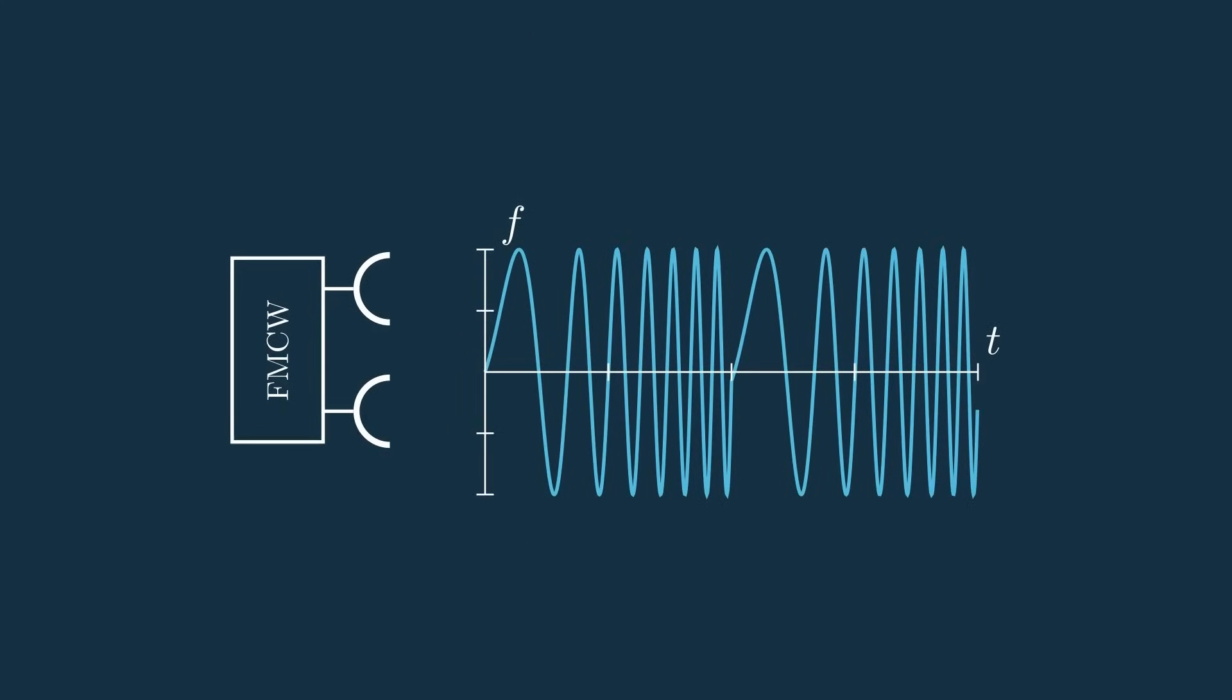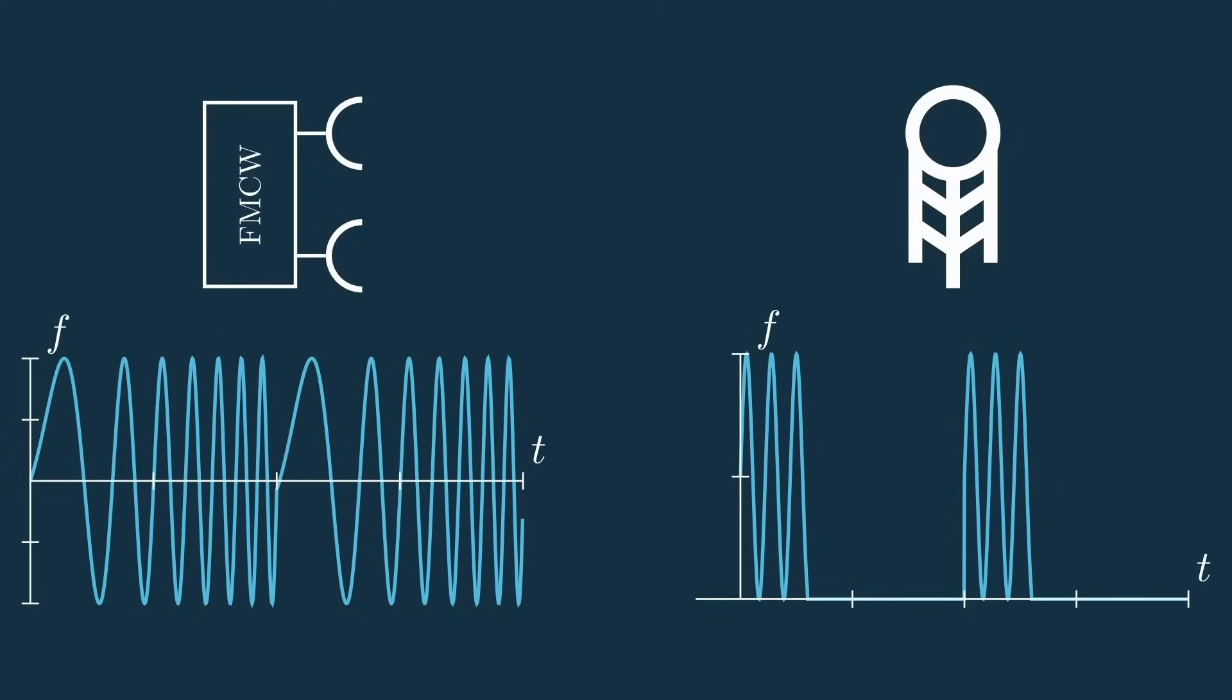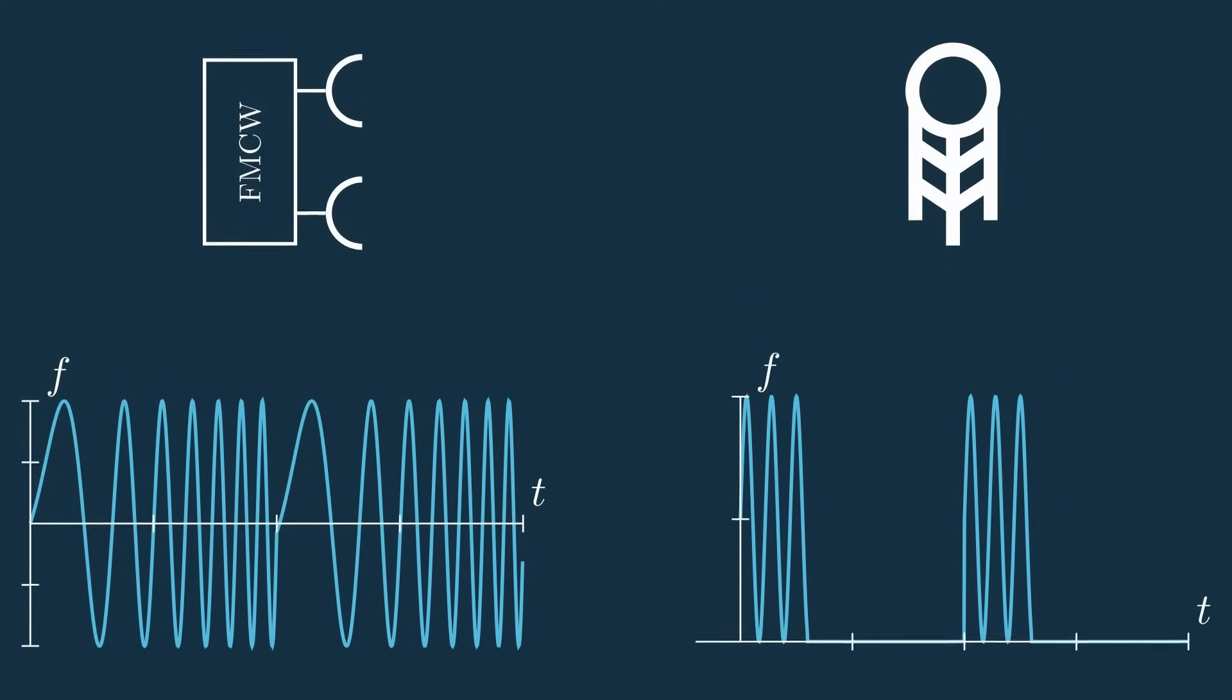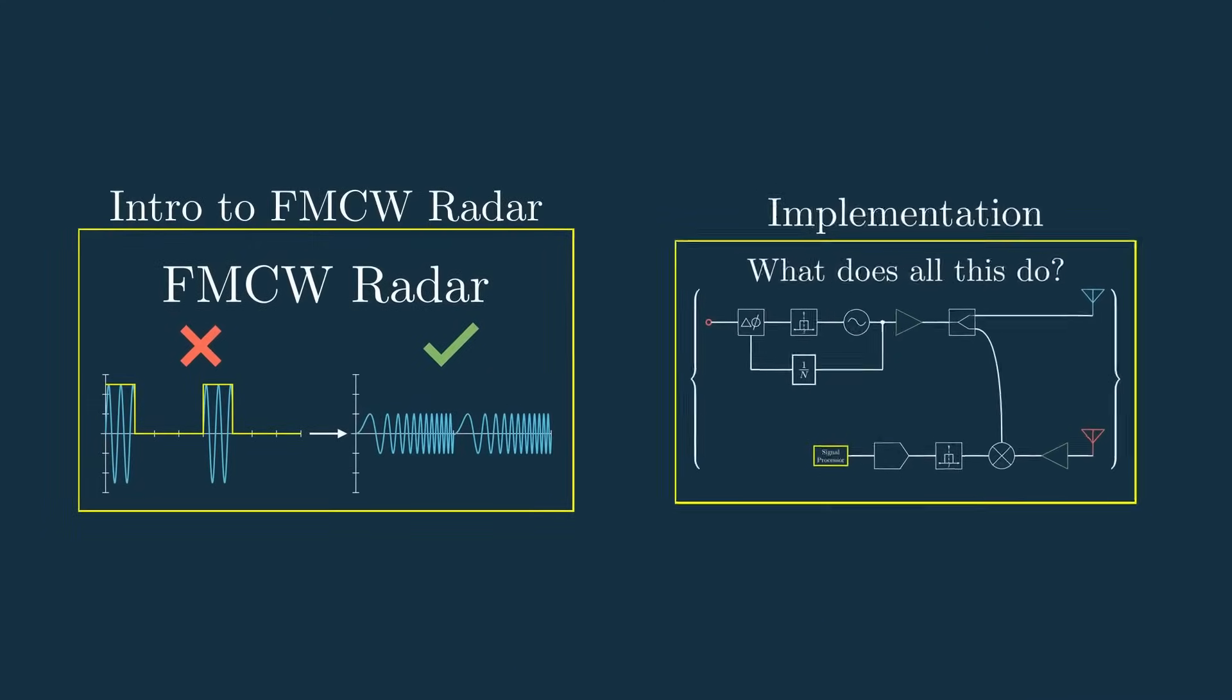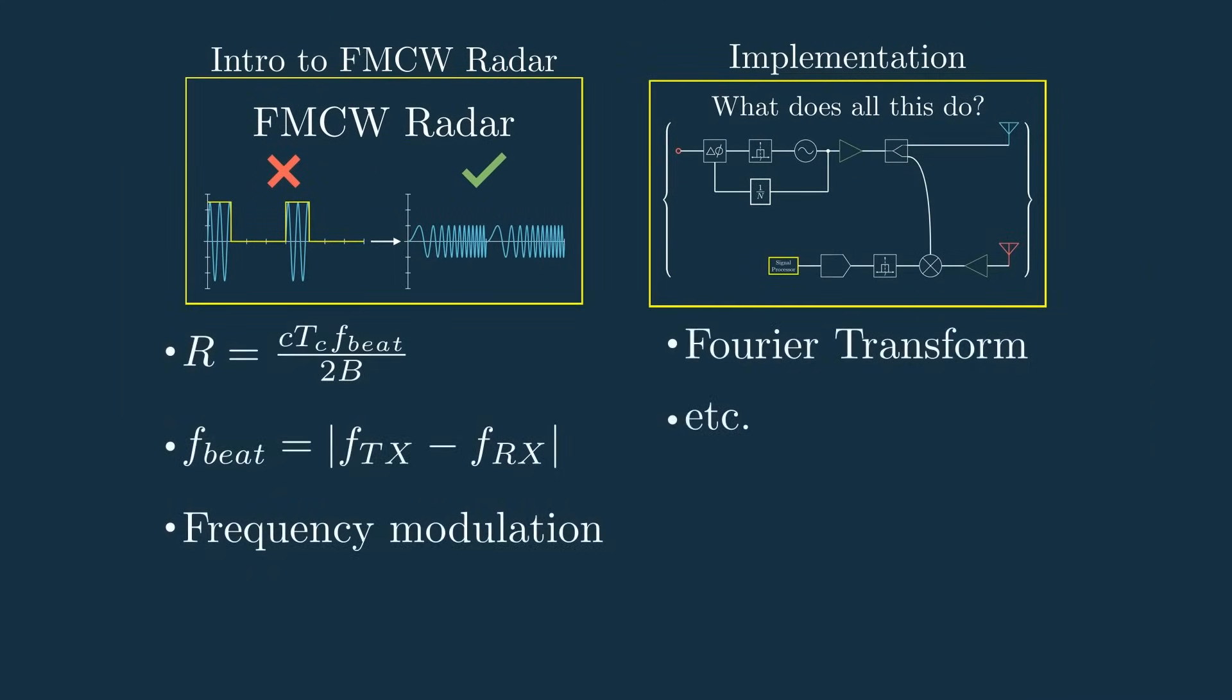FMCW radars change their transmit frequency over time to determine their range of targets, which has some benefits over a single-tone pulsed waveform because we can detect short ranges with extremely fine resolution. If you need a refresher on these basics, head back to the previous videos in this series that cover the FMCW range equation, beat frequency, frequency modulation, the Fourier transform, and even more.